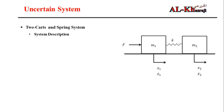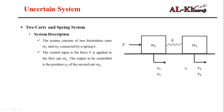We have two carts, each with a mass, separated by a spring. A force is applied to the first mass, and we are interested in controlling the position of the second mass. The system consists of two frictionless carts — there is no damper — connected by a spring. The output of the system is the force, and we are trying to control the position of the second cart.